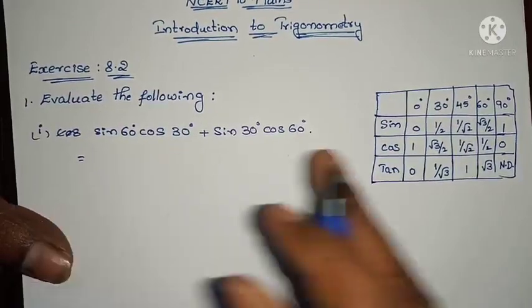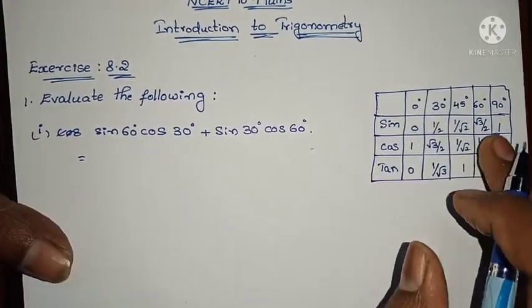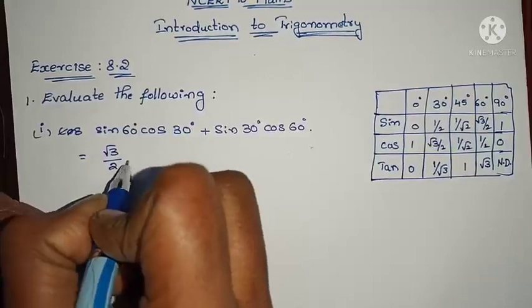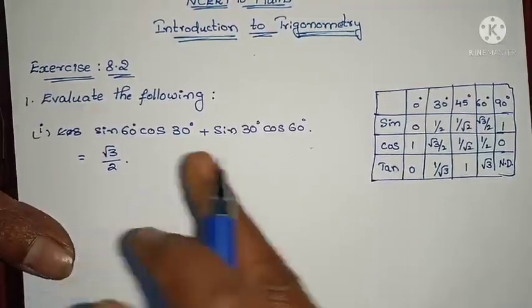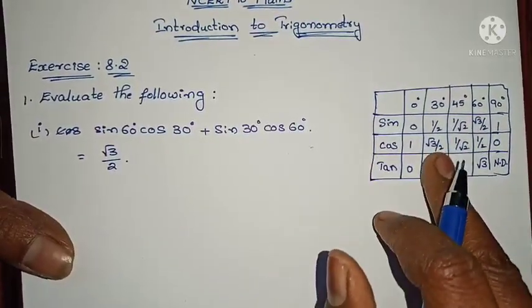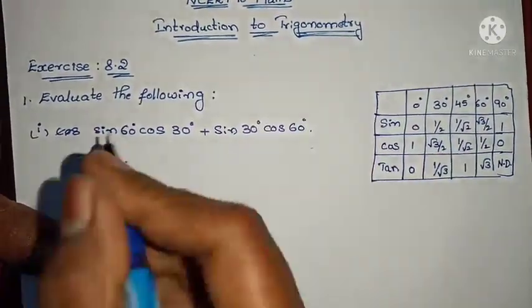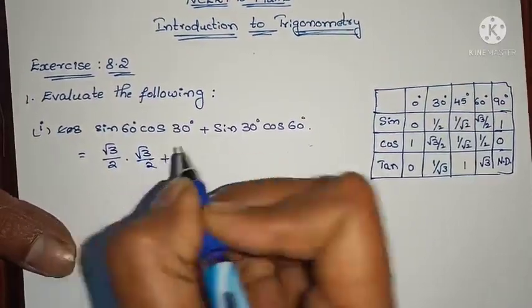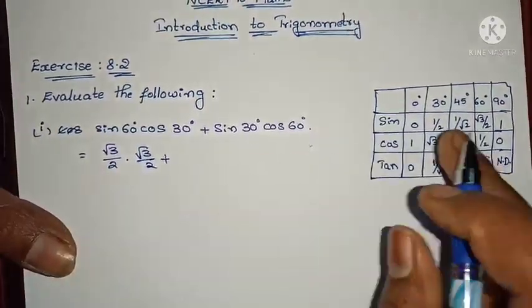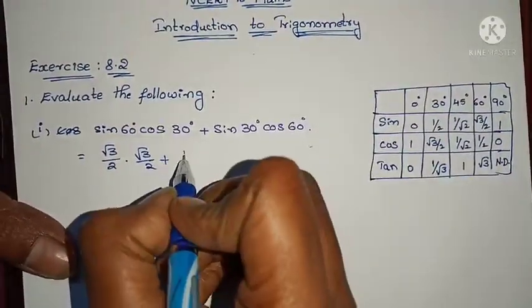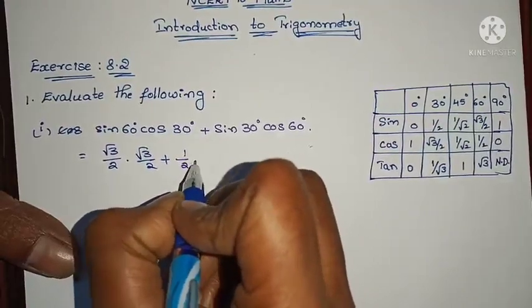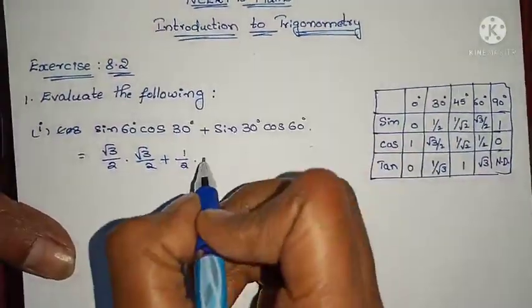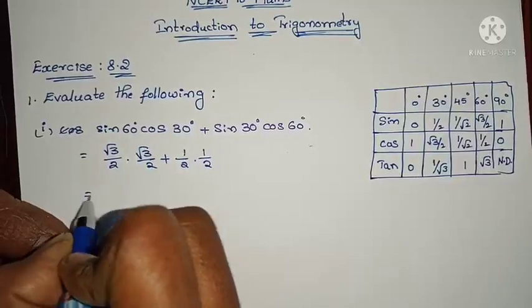Sin 60 degrees is √3/2, into cos 30 degrees, which is also √3/2. Plus sin 30 degrees, which is 1/2, into cos 60 degrees, which is also 1/2. That's all — now let me solve these values to get the answer.